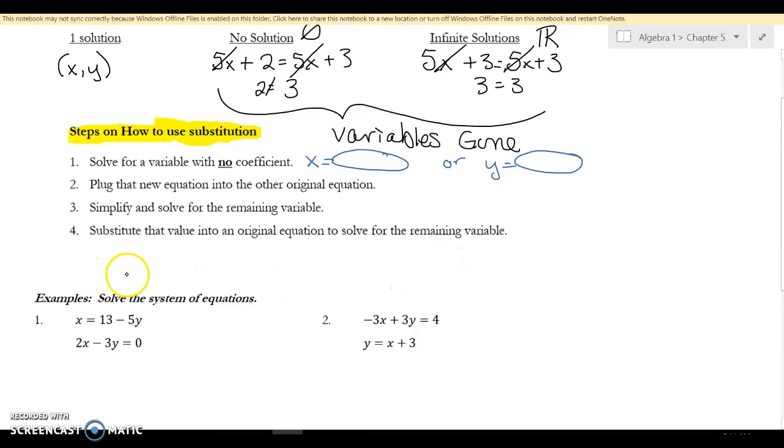Once I do a couple you'll understand. If you notice, X is by itself, so I'm gonna circle that. I circle for two reasons: it makes the first step easier to do, and then I circle for one of the last steps. So this X, I'm gonna plug it in here. It's gonna be two parentheses minus three Y equals zero. I got that from right here.